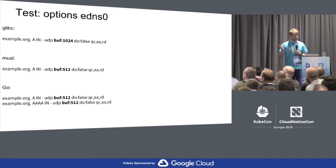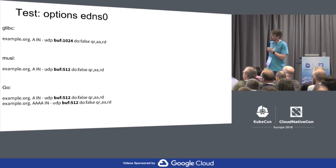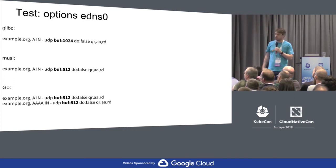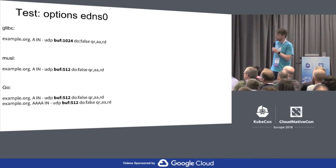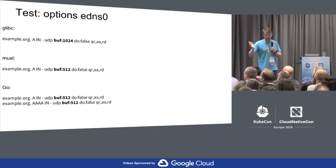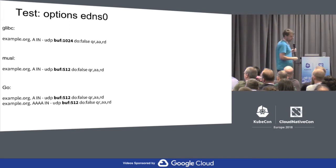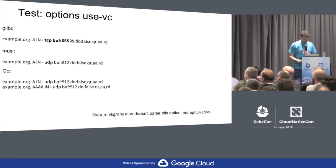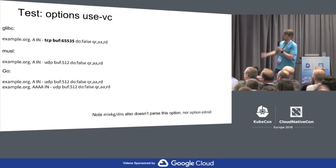Let's test one of these options: edns0. glibc shows a larger buffer — twice the size, so we can fit 26 RRs in it. musl libc doesn't do anything with it. Go also doesn't. It's a non-starter: you can set it but the rest will ignore it, with only a slight benefit in glibc.